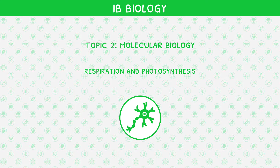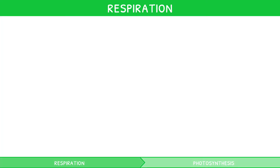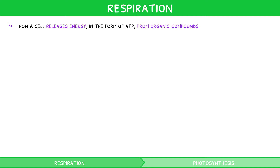All living cells carry out the process of respiration. It can be defined as the process by which a cell releases energy in the form of ATP from its organic compounds. There are two types of respiration: aerobic respiration and anaerobic respiration.